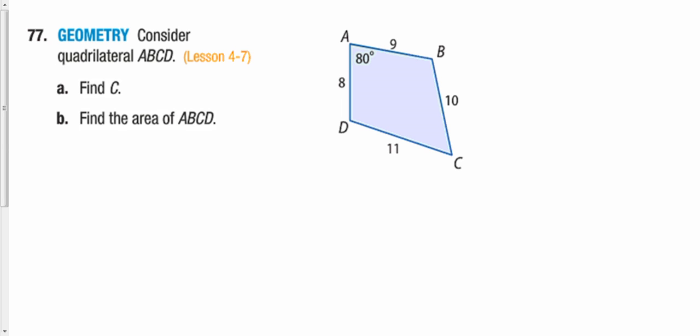This last question will be on the test tomorrow. The approach: split the figure into two triangles, find side c using the law of cosines, then find angle C using the law of cosines again, then find the area of one triangle using the triangle area formula and the area of the other using Heron's formula.